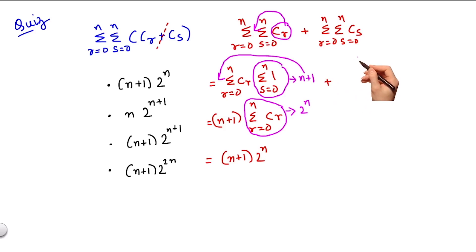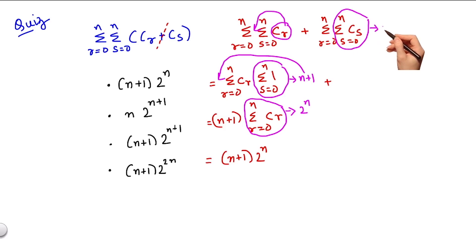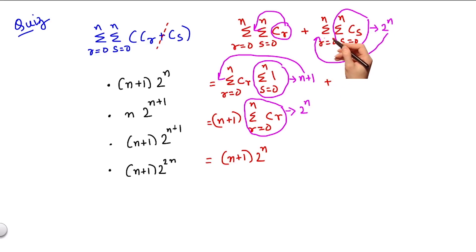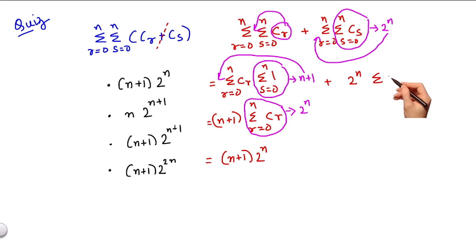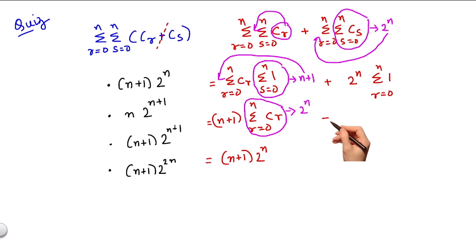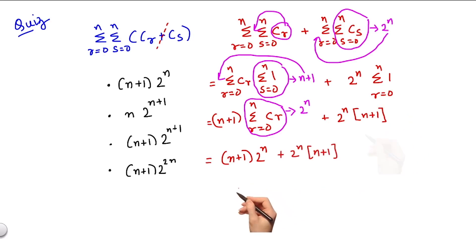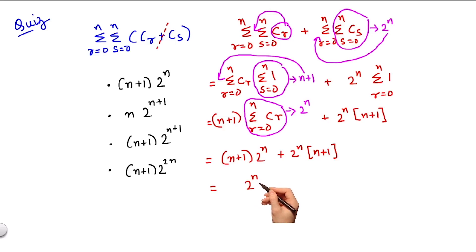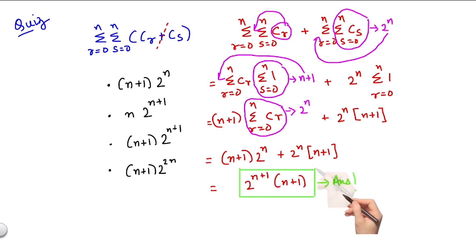Now let's solve the second summation. This summation equals 2 to the power n, and since this is independent of r, I can take it outside to get 2 to the power n times summation of 1, r varying from 0 to n. So this term also becomes 2 to the power n times (n+1). Therefore, my answer becomes 2 to the power n times (n+1), which gives 2^(n+1) · (n+1). Hence option 3 is the correct answer.